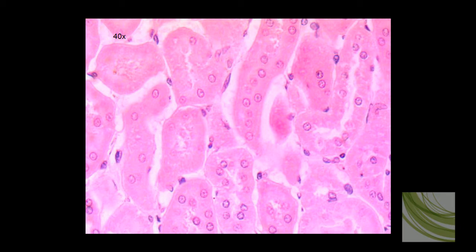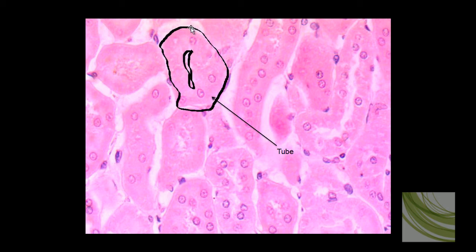Here is that same slide using the 40X objective, and now we can see some of these little tubes a lot clearer. However, the cuboidal cells are not that differentiated — it's kind of hard to see them on this slide, but there would be a tube, there would be a tube. We can see the nuclei of the cuboidal cells. Here I've outlined one of the tubes that is lined with simple cuboidal.